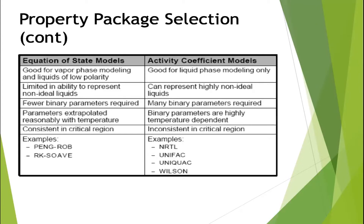For the oil and gas industry, equation of state models are primarily used; activity coefficient models are used for chemical-based industries. Equation of state models are good for vapor phase modeling and low-polarity liquids, but limited for non-ideal liquids. Binary parameters are built into the simulation — you can adjust them to match actual plant data, but generally we only switch property packages rather than changing binary parameters.